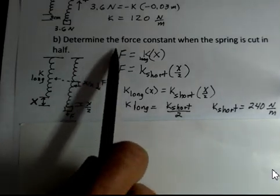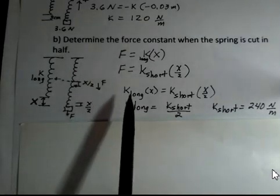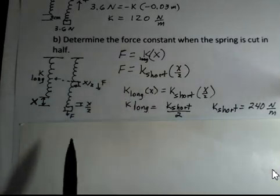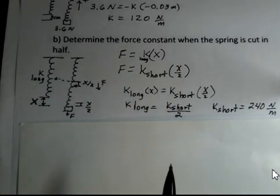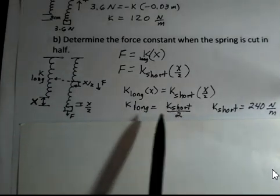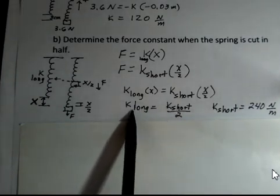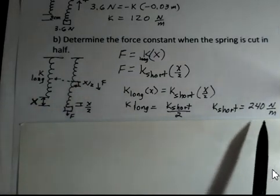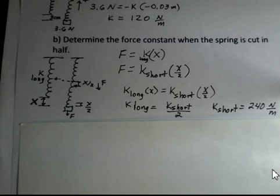Well, these two forces are the same. And we'll make a substitution for this force, k long times x. The x's cancel, and we have that the k long is equal to k short divided by 2. So we have to double the k for the long spring. It was 120 newtons per meter. So our k of our short spring is 240 newtons per meter.